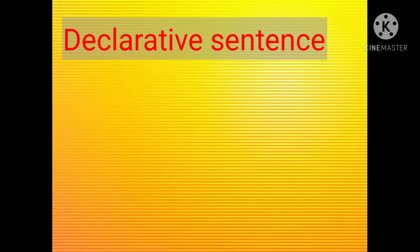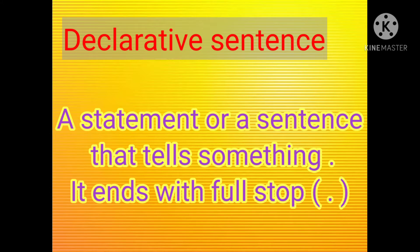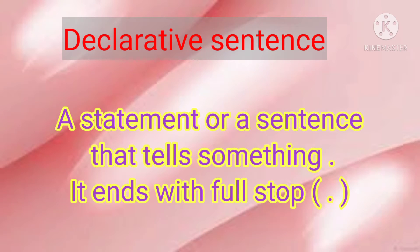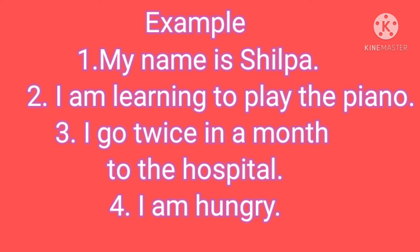First, declarative sentence. A declarative sentence means a statement, or any sentence that tells something. This sentence always ends with a full stop. Examples: My name is Shilpa. I am learning to play the piano. I go twice in a month to the hospital. I am hungry.